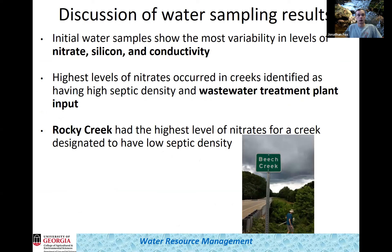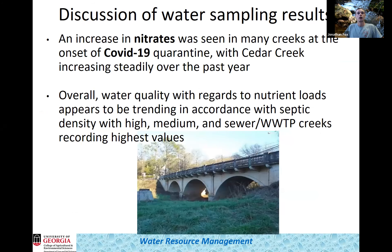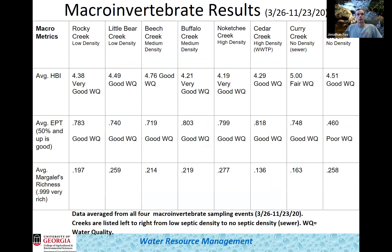Rocky Creek, one of our low septic tank density creeks, had the highest nitrate levels for a creek that was supposed to be fairly clean — that really surprised us. Additionally, nitrate increases were seen at all creeks during the onset of the COVID-19 quarantine, as more people used the restroom at home rather than at work or school, adding more input during those first few months. Overall, water quality tended to trend with nutrient loads — high density creeks had the worst quality, medium and sewer creeks were moderate, and low density creeks were fairly clean.